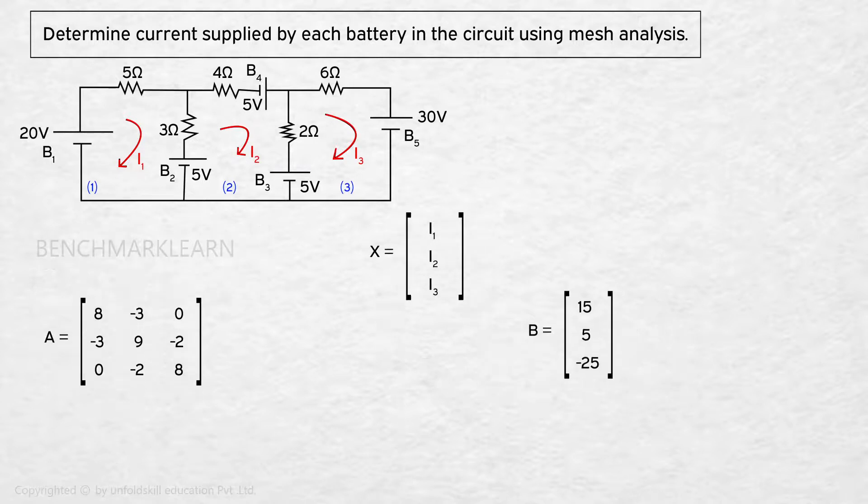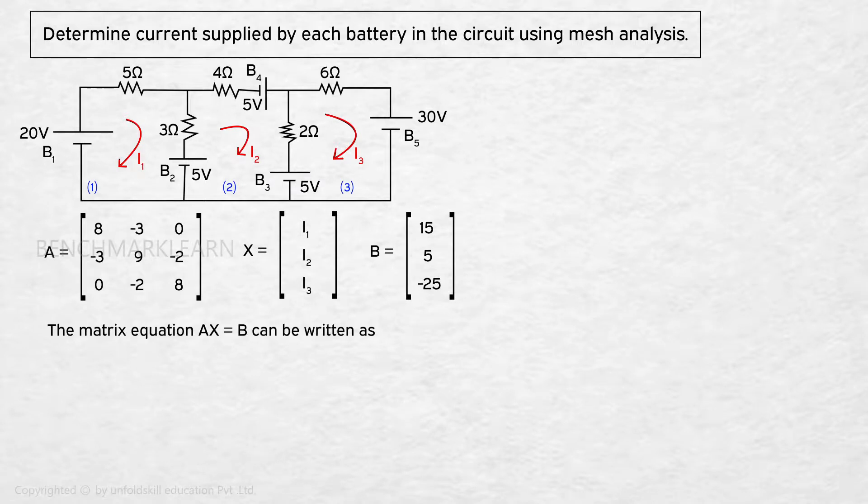The matrix equation AX equal to B can be written as 8, minus 3, 0, minus 3, 9, minus 2, 0, minus 2, 8 into matrix I1, I2, I3 equal to matrix 15, 5, minus 25. Solving for the column matrix,